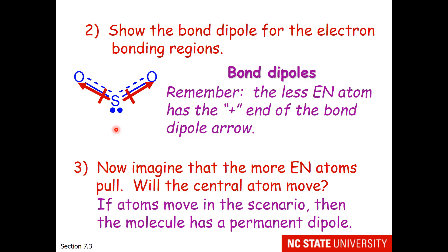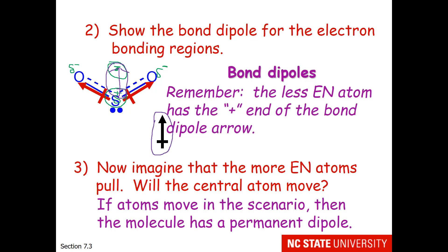If the atoms move in this scenario, then the molecule has a permanent dipole. If you pull on these oxygens, the sulfur is going to move up — the direction sulfur moves is the overall dipole of the molecule. We can also look at partial charges: the oxygens will be partially negative and the sulfur will be partially positive. The center of positive charge is on the sulfur, and the center of negative charge is between the two partial negatives. Drawing an arrow from the center of positive charge to the center of negative charge gives exactly the same dipole as the pulling scenario.